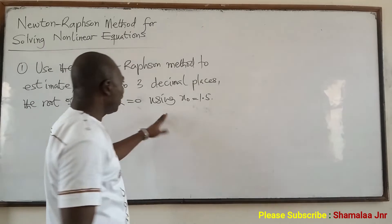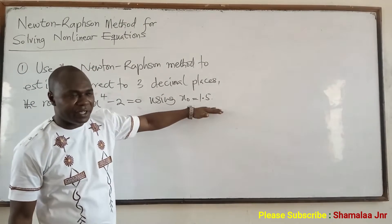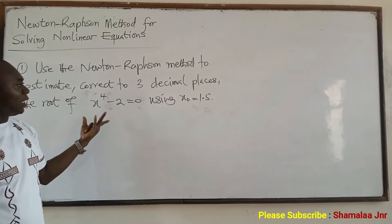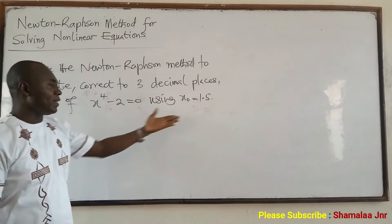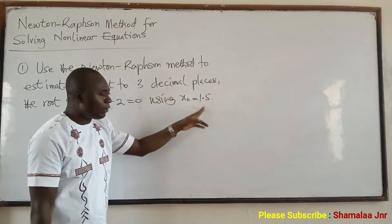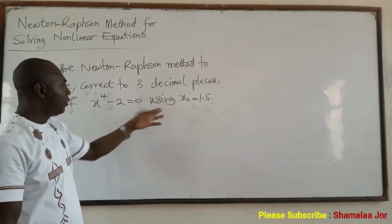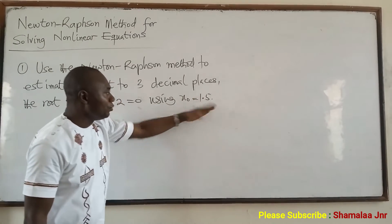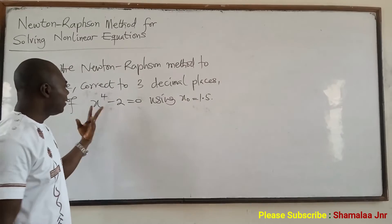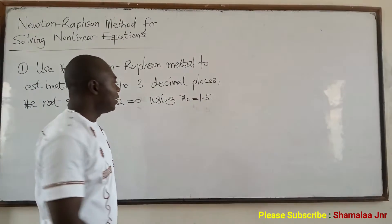Now, we have been given x0 equal to 1.5. We are going to start with this. How do you get this? You look at the question and try to guess a solution — just guess that the solution will be somewhere around this. So when x0 is not given to you, you can just guess. Just look at the question and say that if I solve this, I'm likely to get something around here. So yes, guess, and then start the iteration.